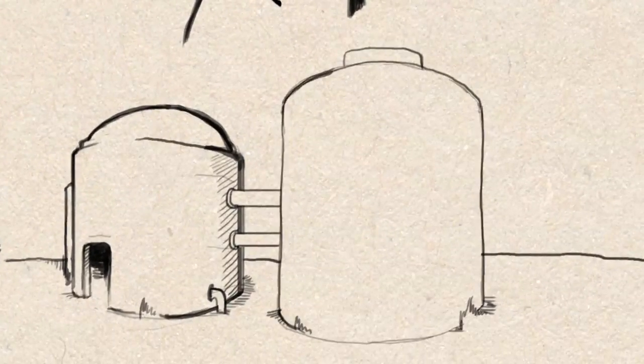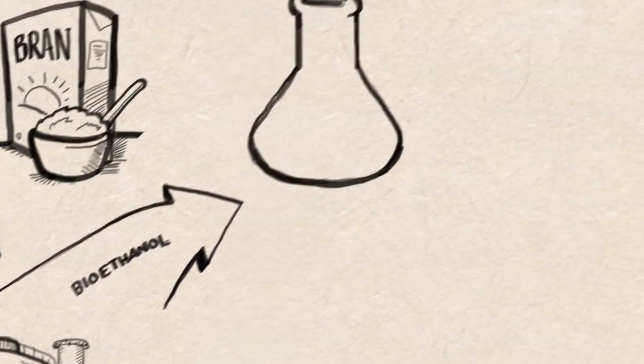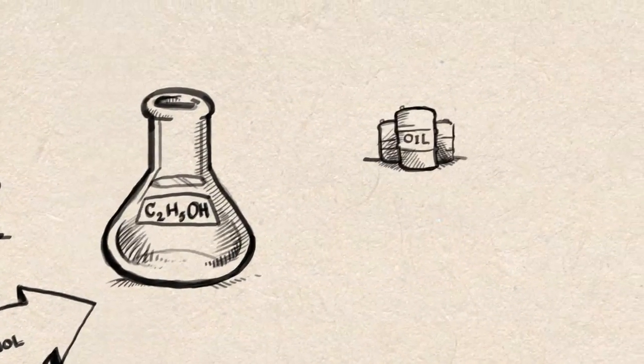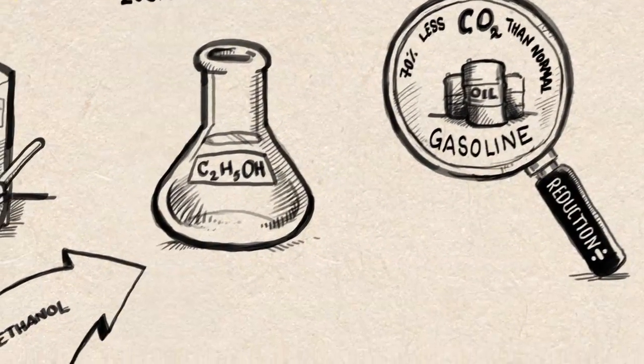The remaining part of the biomass is fermented and the starch is converted into bioethanol. Today, all Danish gasoline contains 5% bioethanol to lower CO2 emissions, but the potential is much greater.